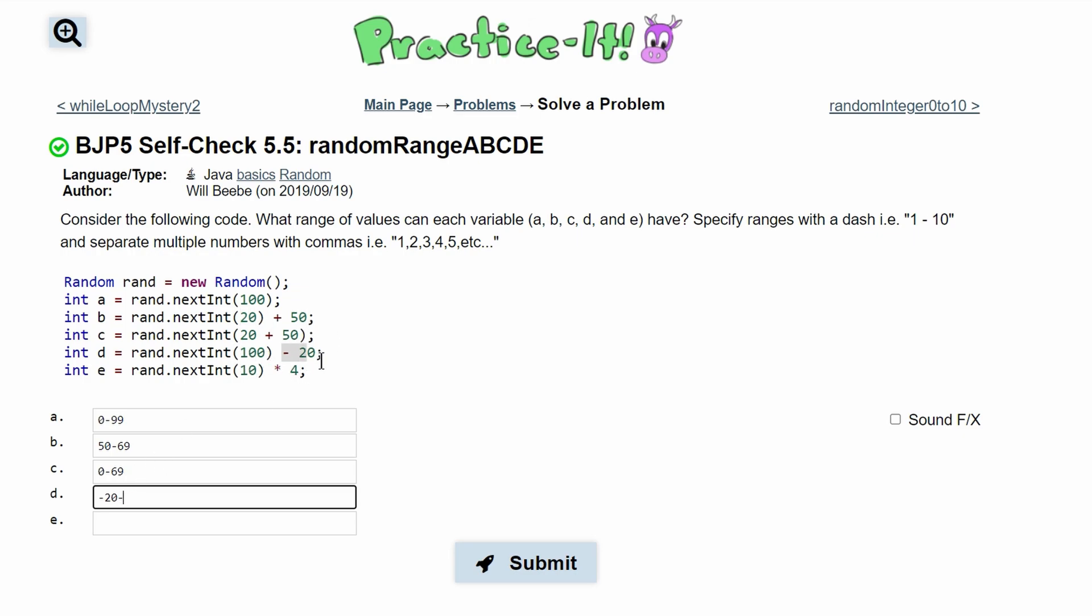So 100 more than our negative 20 would be 80. So we're going to go to 80 but not touch 80, so we're going to hit 79.